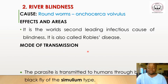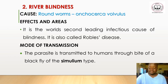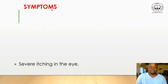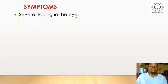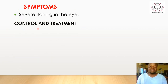The parasite is transmitted to humans through the bite of a black fly of the Simulium type. Certain flies that are black in color are able to transmit the worm. Symptoms include severe itching in the eye — the eyes itch repeatedly and uncontrollably, causing the person to scratch them constantly.